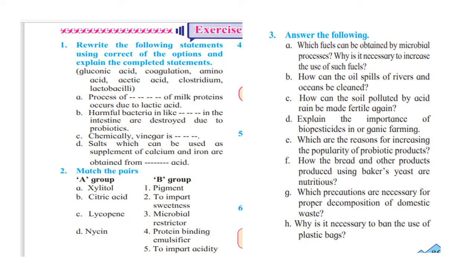Third answer: chemically, vinegar is acetic acid. Fourth one: salts which can be used as supplement of calcium and iron are obtained from dash acid. The answer is gluconic acid.